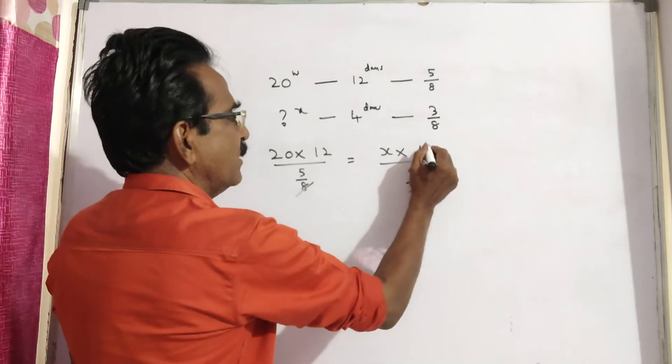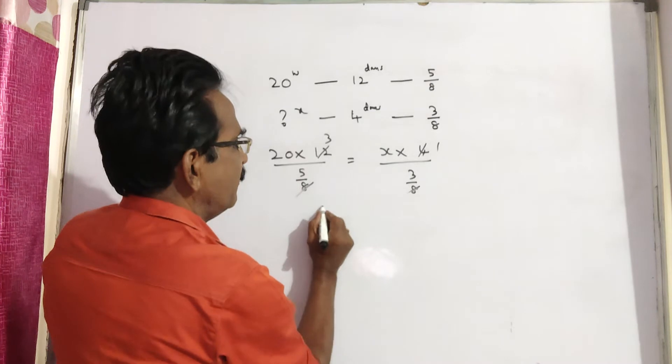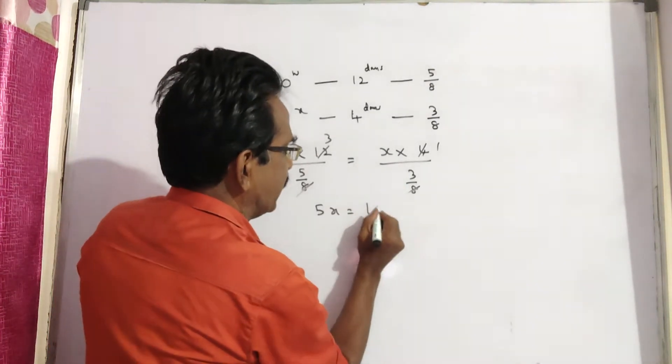8 gets cancelled, 4 and 1, 4 and 3, so 5X is equal to 3 threes, 9 into 20, that's 180.